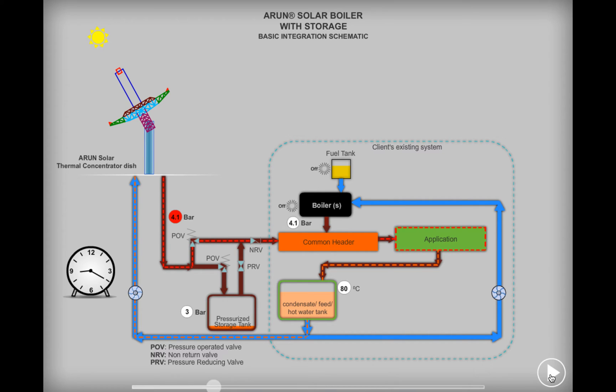Now, if there is a reduction in steam usage by the process due to a holiday, lunch break, end of batch, or any other reason, the upstream pressure will increase, causing a valve to open, thereby delivering steam to the storage tank. This process will continue whenever the sun is available.